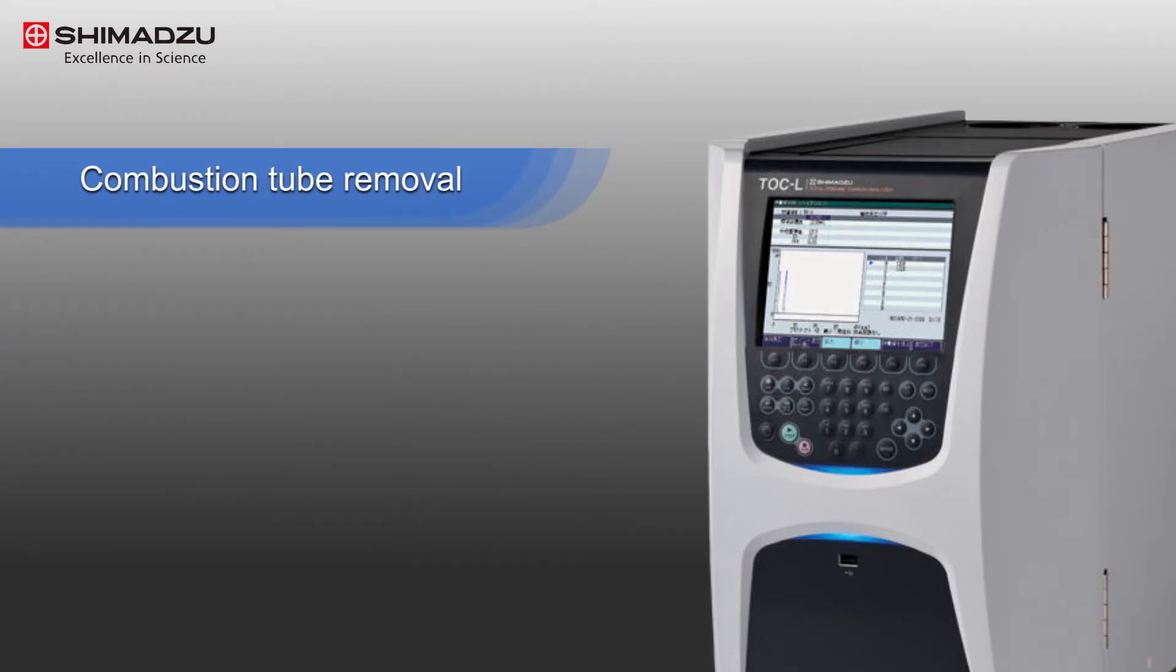We will start with the removal of the combustion tube. Be sure to operate the following steps when the temperature of the electric furnace is at room temperature.